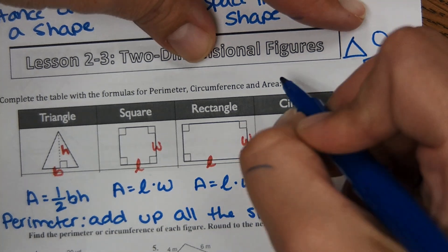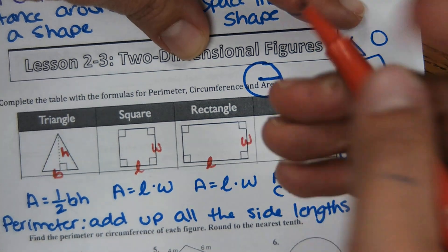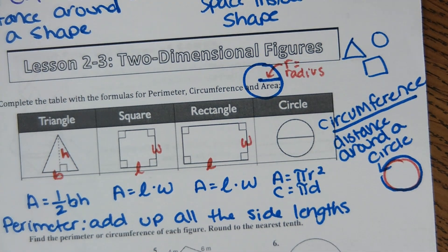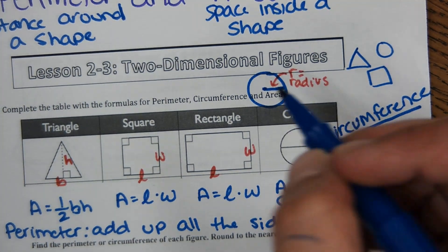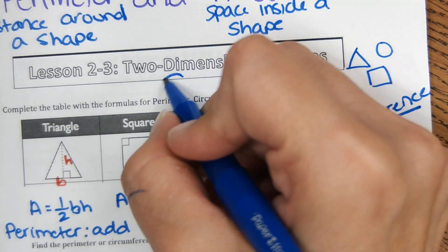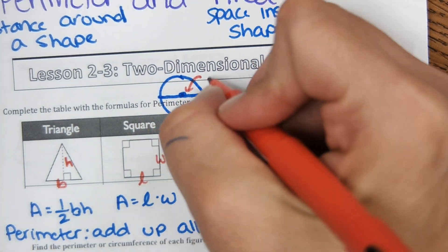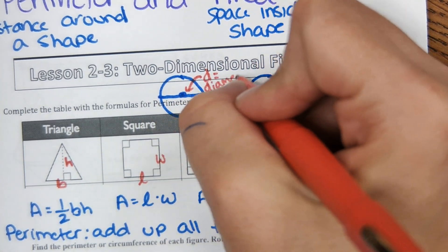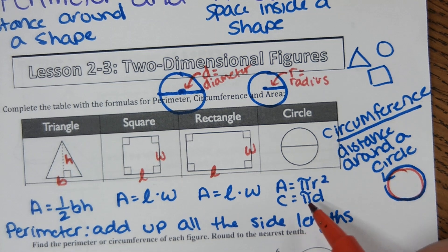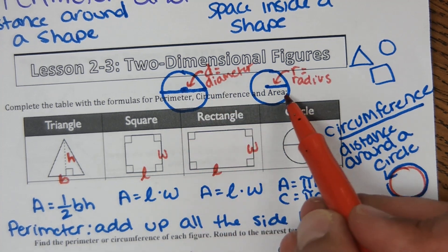Radius is halfway across the circle, so r equals radius. Diameter goes all the way across the circle, so this would be d, diameter. If you're given radius but need diameter for this equation, you can just multiply by 2. Or if you're given diameter and need radius for area, you just divide by 2.